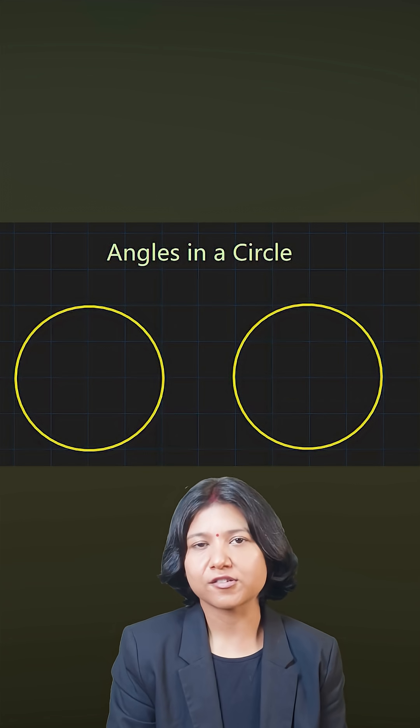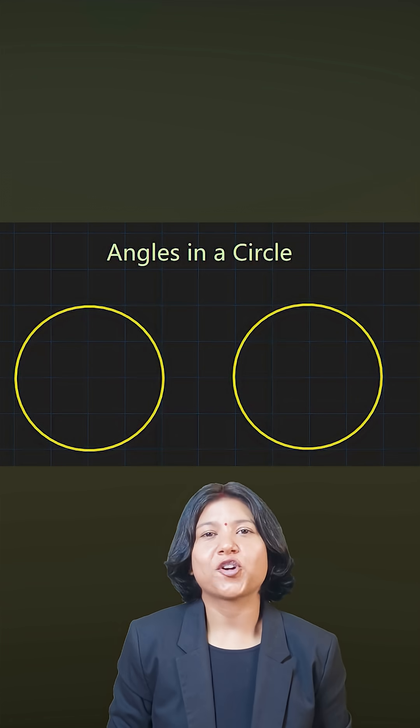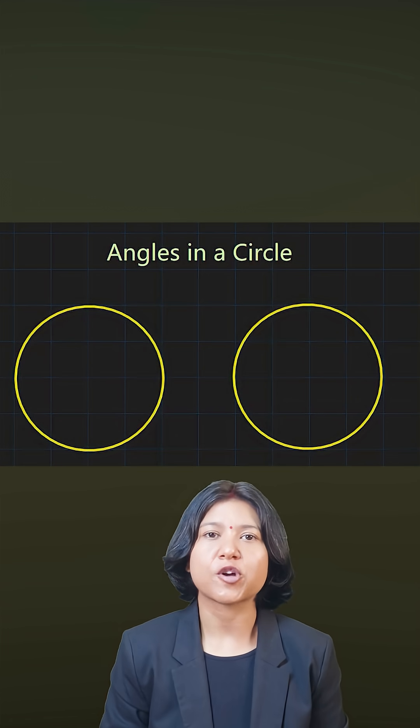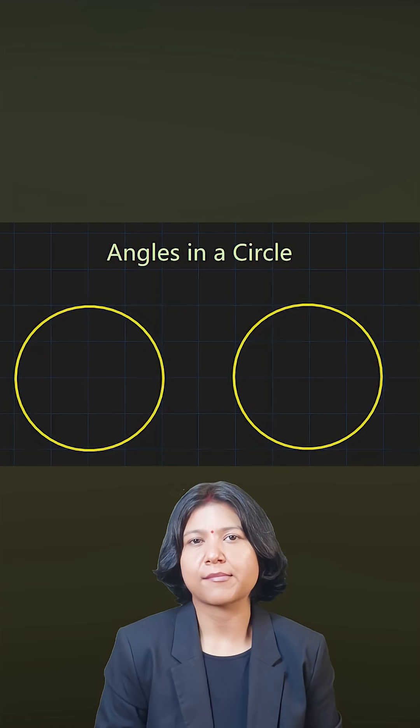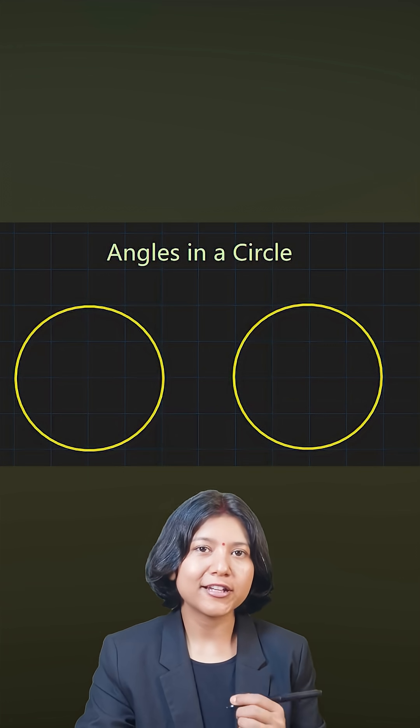Finding angles inside a circle is very interesting because the circle is so perfect it follows a lot of theorems which talk about equal angles or how the angles are connected.